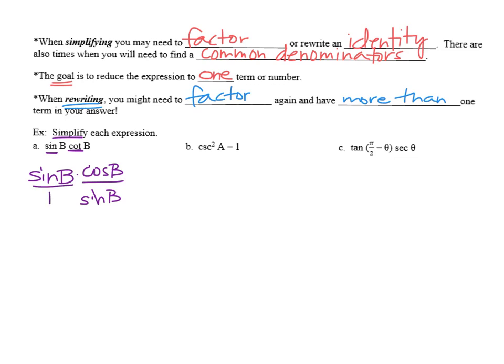If there's a sine in the numerator and denominator, they would cancel out, leaving us with cosine B over 1, which is the same as cosine B. There's one trig term in our final answer.